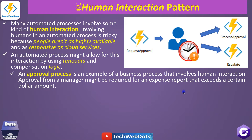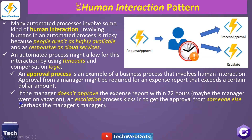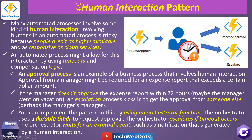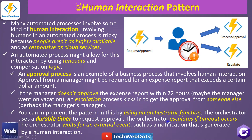An approval process is an example of a business process that involves human interaction. Approval from a manager might be required for an expense report — maybe some important decision that exceeds a certain dollar amount. If the manager doesn't approve that expense report within 72 hours, maybe they went on vacation, and an escalation process kicks in to get approval from someone else — maybe the manager's manager. You can implement this pattern using an orchestration function with a durable timer to wait for a specific time to request approval.